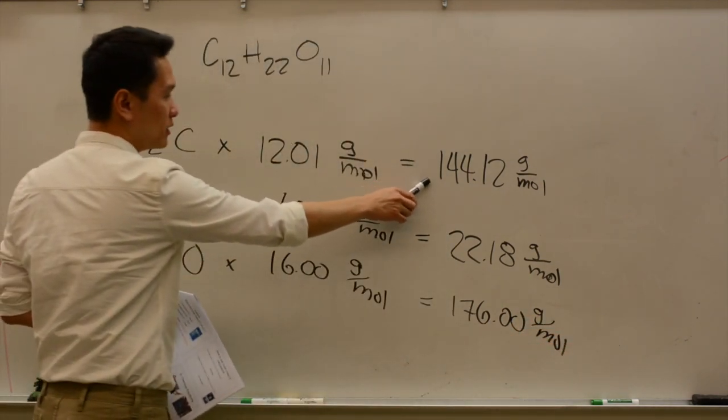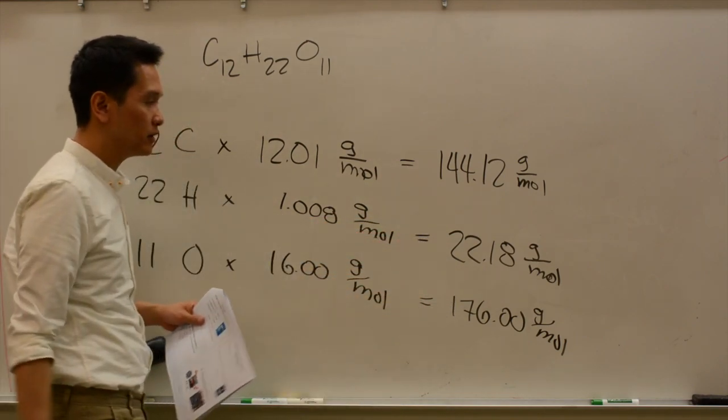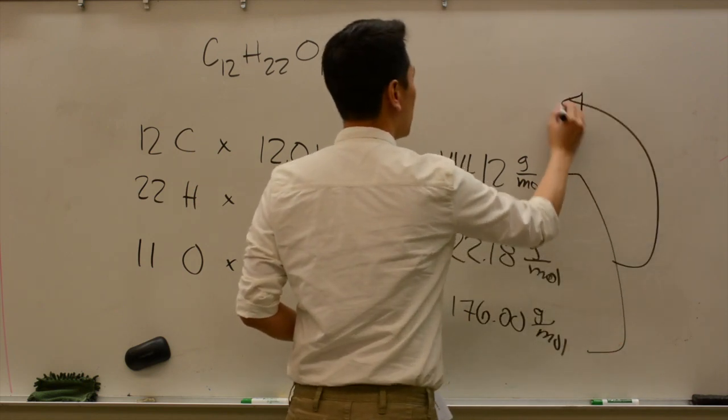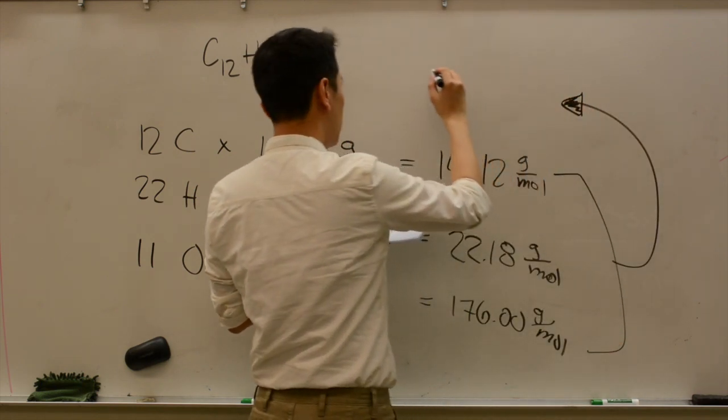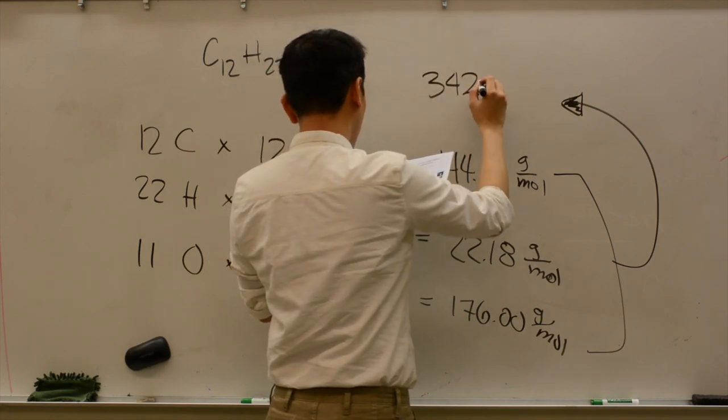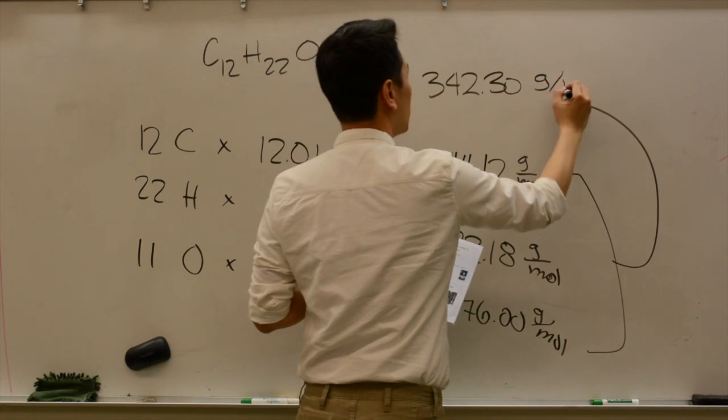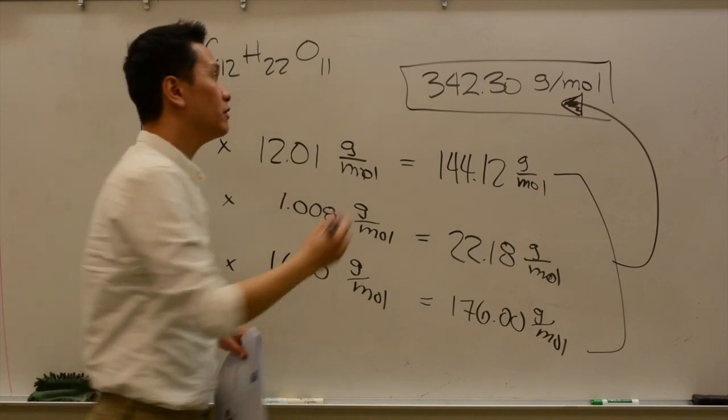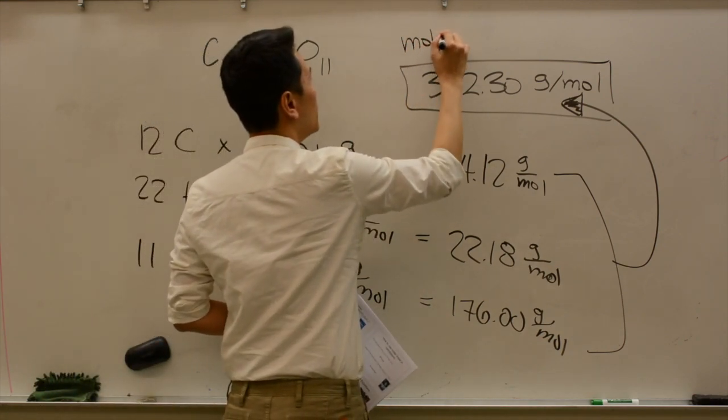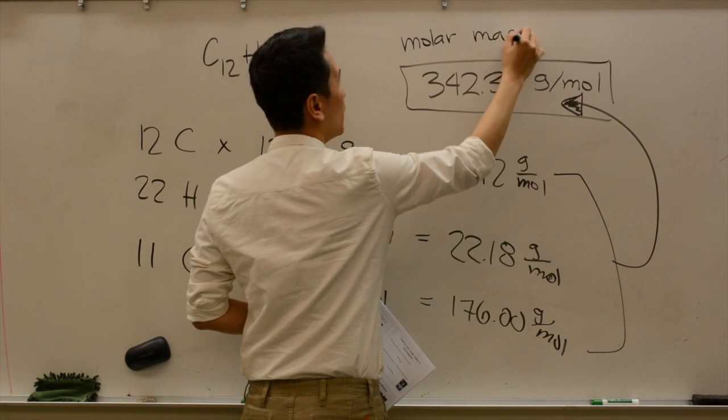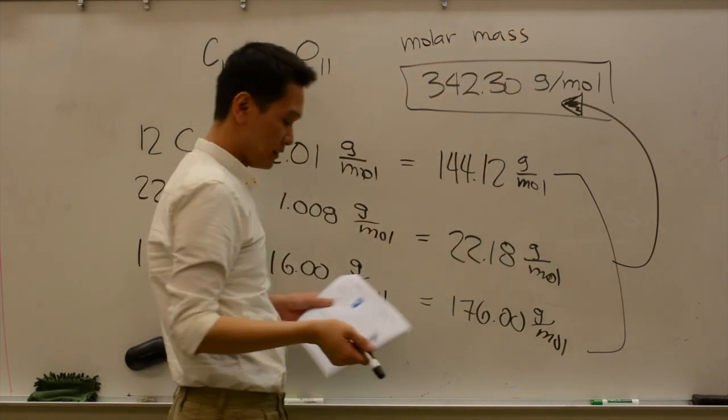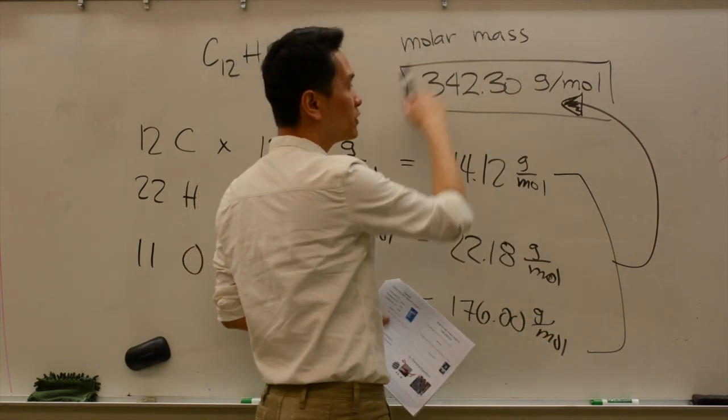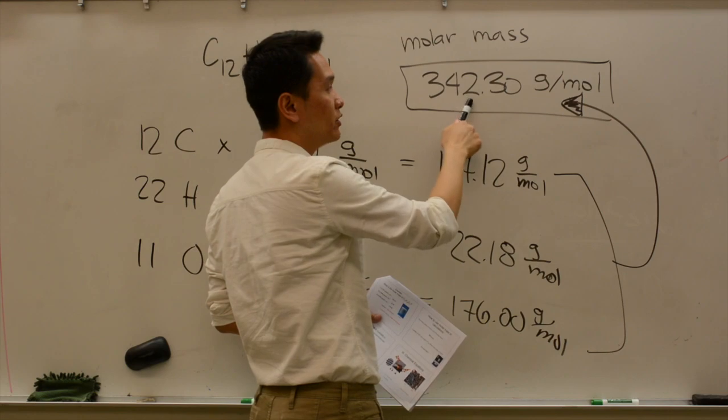That's how much carbon contributes, that's how much hydrogen and oxygen contributes. So if you add them all up, you would get a total of 342.30 grams per mole. So that total number, we call that the molar mass of the molecule, or sometimes just the molecular mass. So if we have, for example, one mole of sugar, it will weigh 342.30 grams.